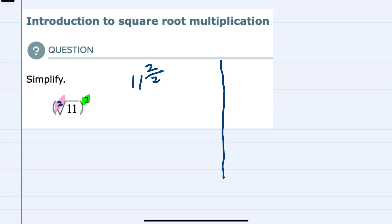Here we can simplify the exponent — we have a 2 in the numerator and the denominator, so this would be 11 to the power of 1, which is 11.